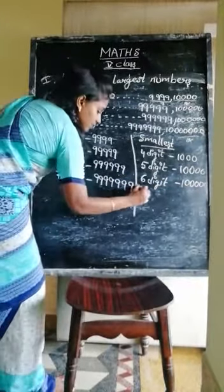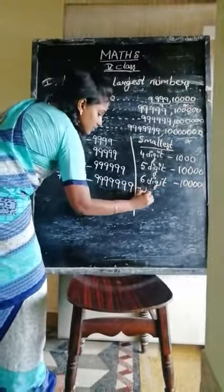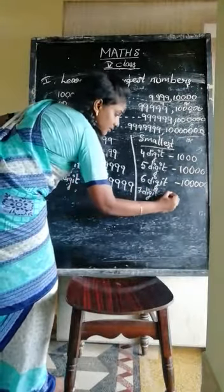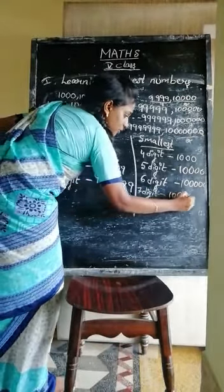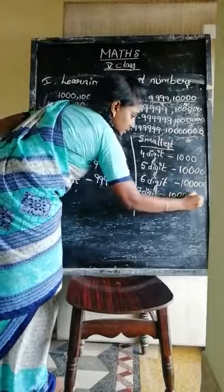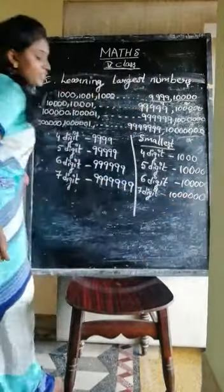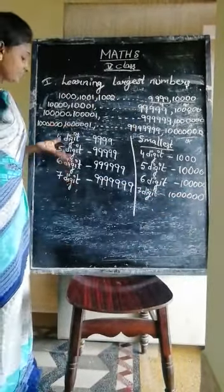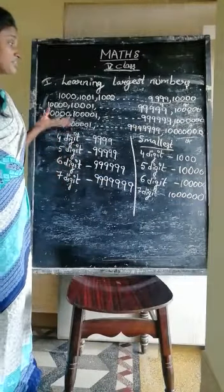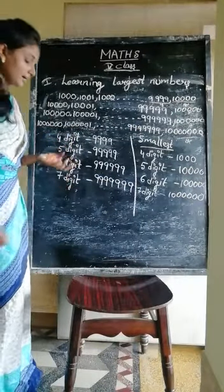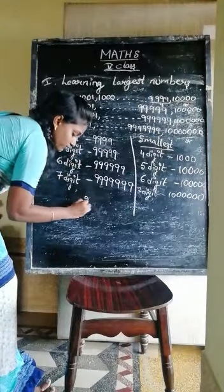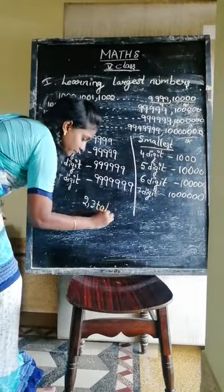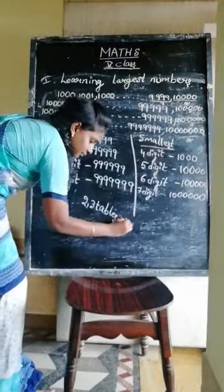And again, the 7-digit smallest number is 10,000,000. Do you understand, children? Please learn it by heart. Digit largest and smallest numbers are very useful topics. Learn them. Today's homework is the 2 and 3 times tables — write them 2 times.